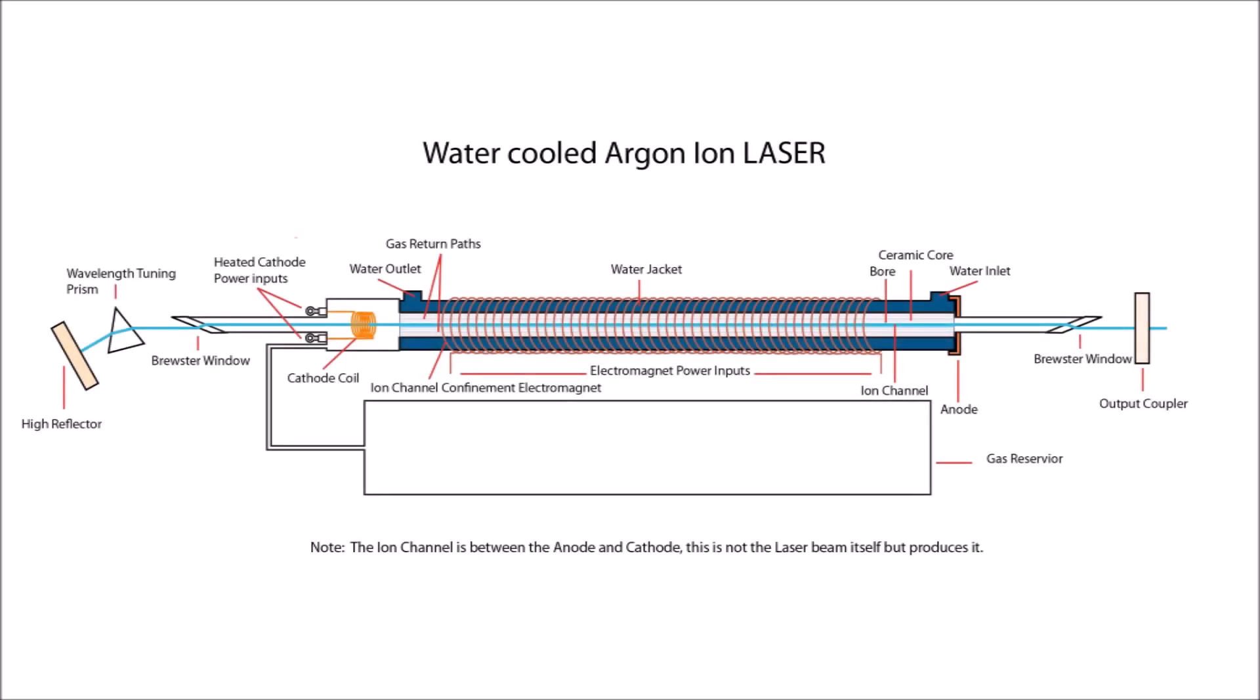The next laser is a 6 watt water cooled argon ion, which is a Lexel 95. There are some parts in this diagram, an electromagnet, water jacket, gas reservoir, and tuning prism. Here my fellow laserist Adam explains all the parts and how they work.